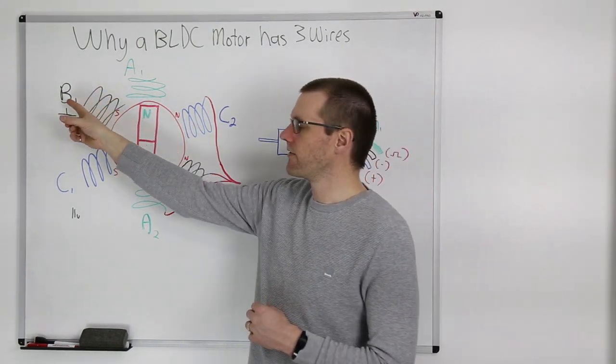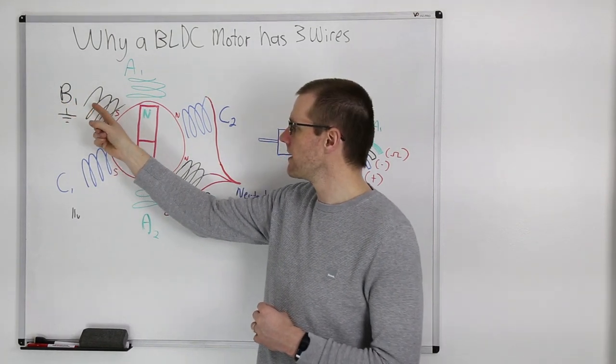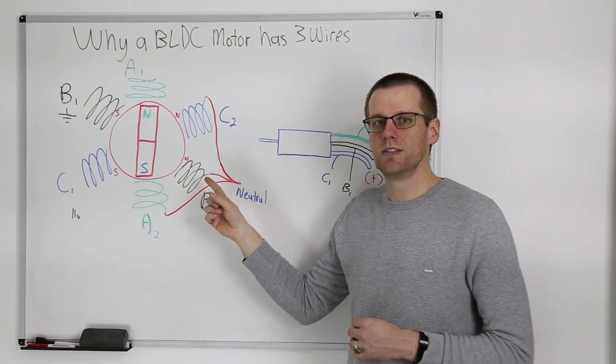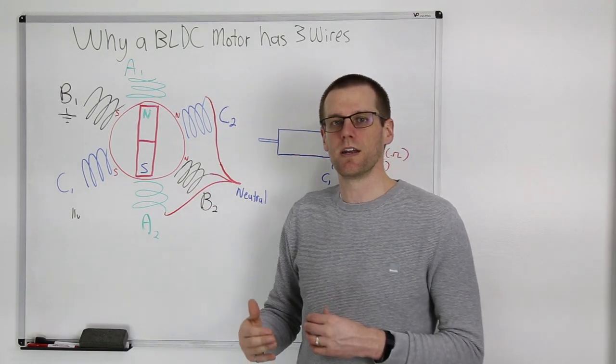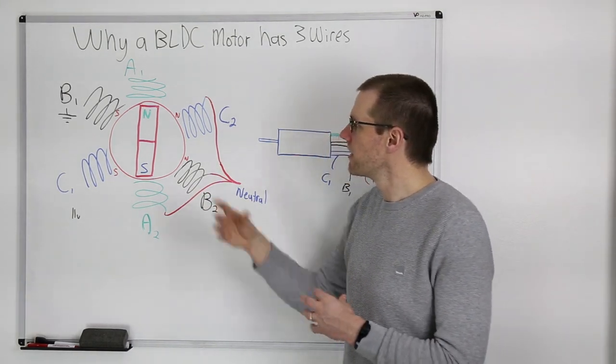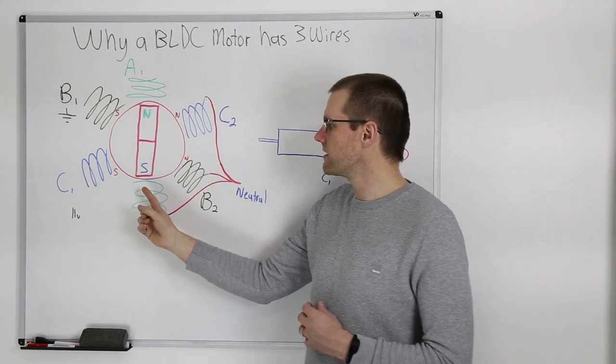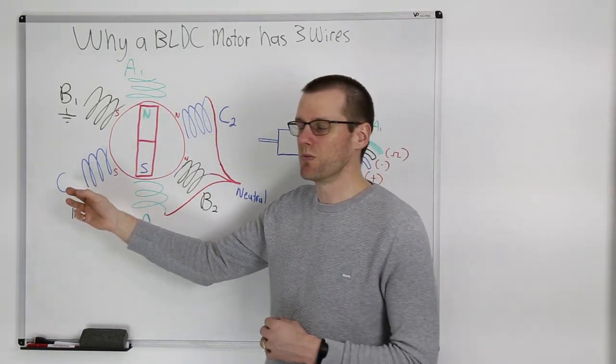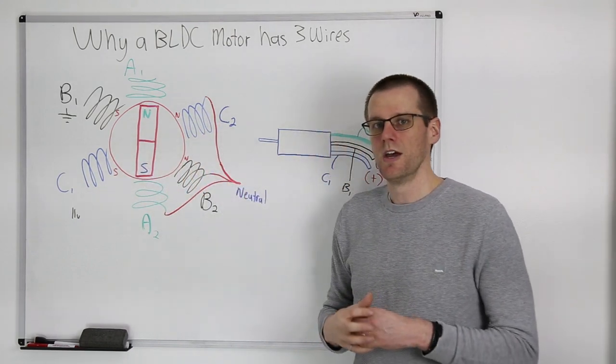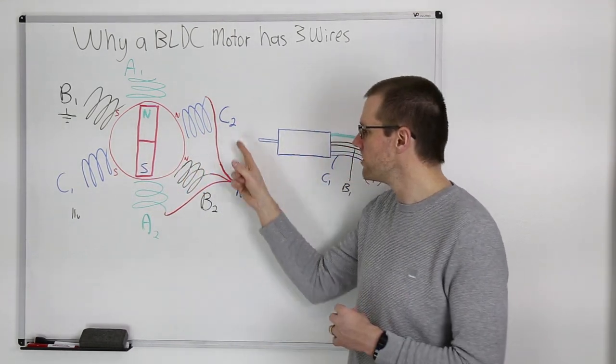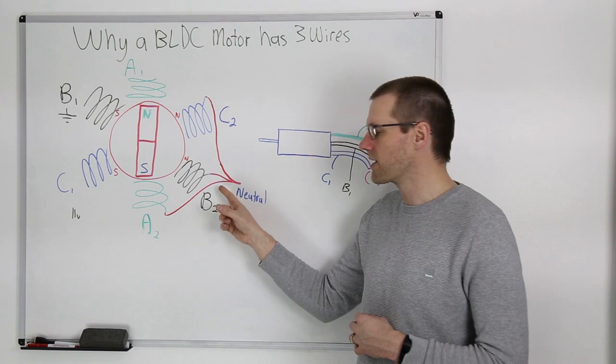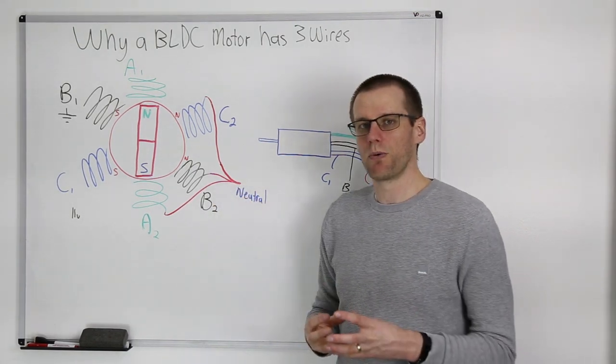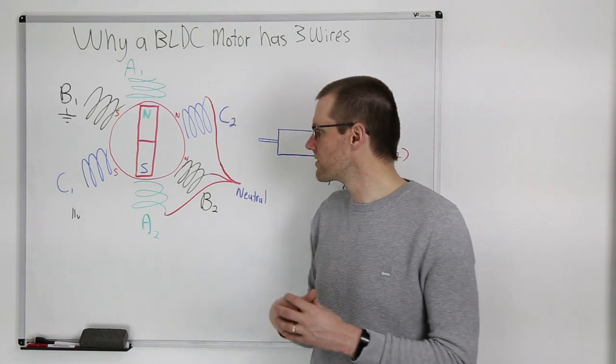So let's take a look at B1 for example. We have a winding that is ran here and it is connected to B2, which is exactly on the opposite side of the motor. Same thing for A1, it is going to be connected to A2 on the opposite side of the motor. And same thing with C1 connected to C2 here. Now, if you notice all of the twos, A1, A2, and B2 are connected by this wire that forms a neutral point within this motor. And that is quite important.